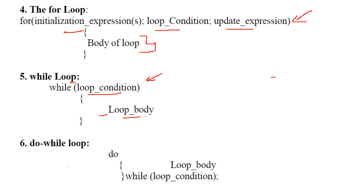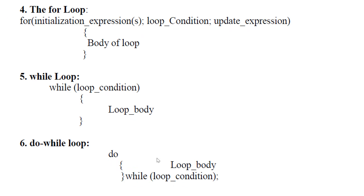The do-while loop is similar to for and while loops, but with one key difference: it is an exit-controlled loop, meaning the condition is checked after at least one execution of the loop body. The syntax is: 'do { statements; } while (condition);'. The loop body executes first, then the condition is evaluated.